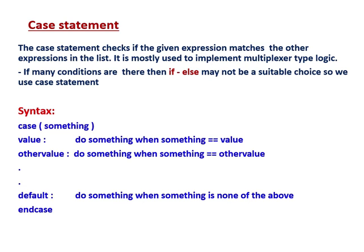We learned in my previous lesson that if-else also infers a multiplexer, and case statement also infers a multiplexer. So if if-else is already there, then why use case statement? Why we go for case statement? For example, if you have 20 if-else conditions, then writing 20 if-else conditions is a bit lengthy and it is not a suitable choice. So in that scenario, we go for case statement. If many conditions are there, if-else may not be a suitable choice, so we use case statement.